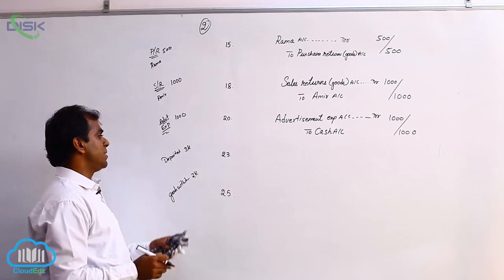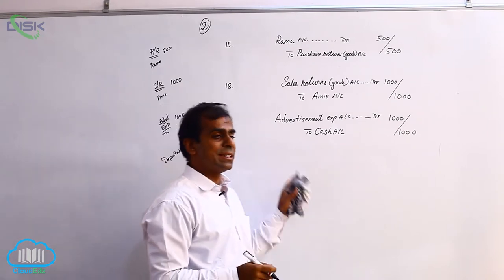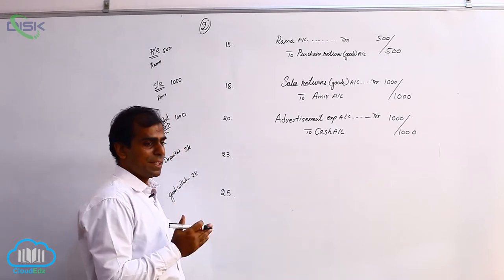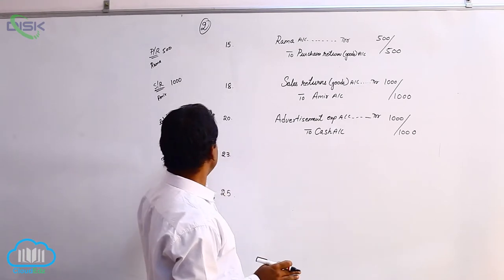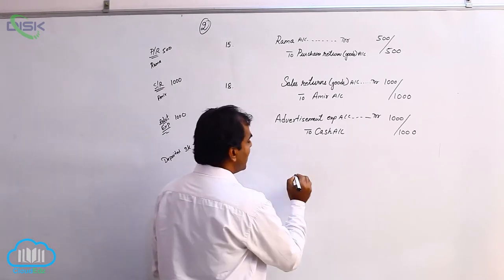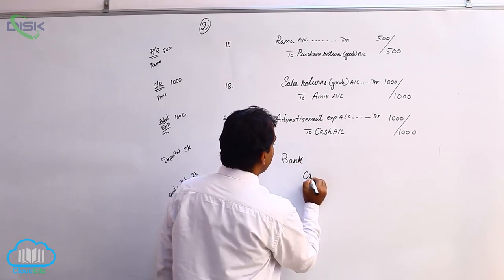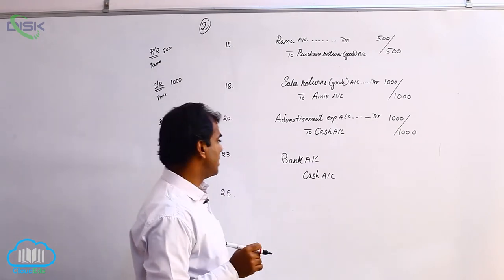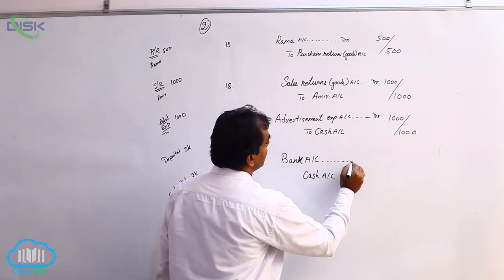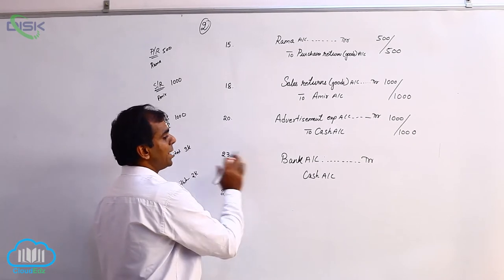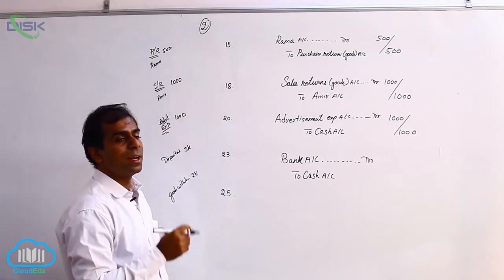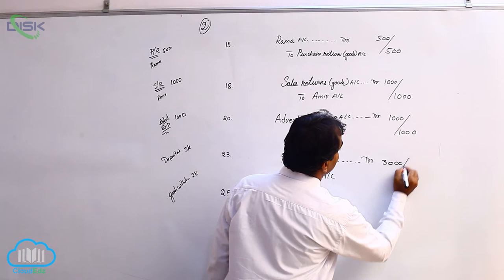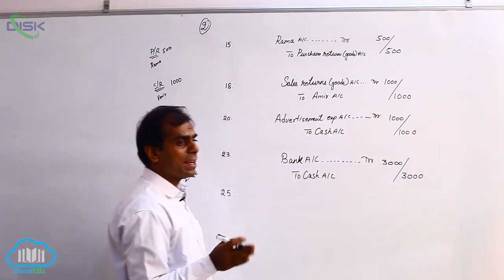The next transaction on 23rd: cash deposited into Syndicate Bank. The name of the bank is only a reference — we will account it as bank only. Cash deposited into bank: 3000. The two accounts affected are cash and bank. Bank is a personal account and it is receiving cash from the business, so we debit bank based on the personal account rule — debit the receiver. Entry: bank account debit to cash. Cash is a real account and when we deposit cash in the bank, cash is going out. The amount being 3000. Narration: being deposit of cash into bank.